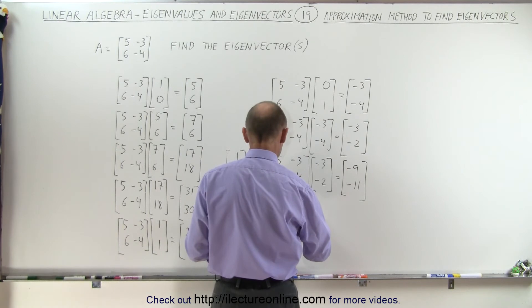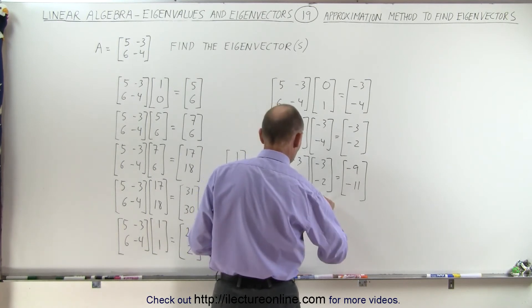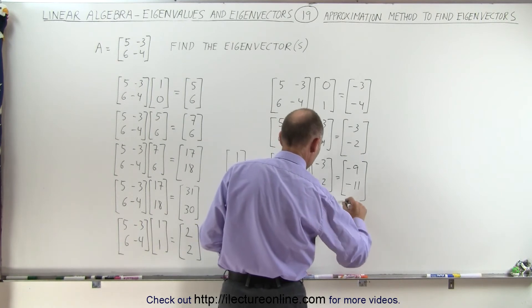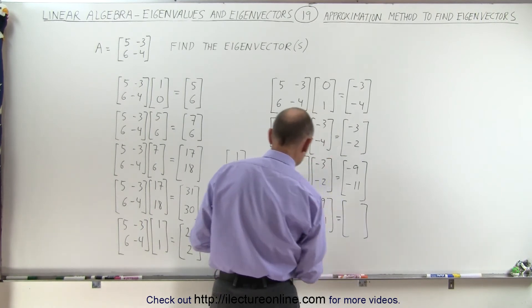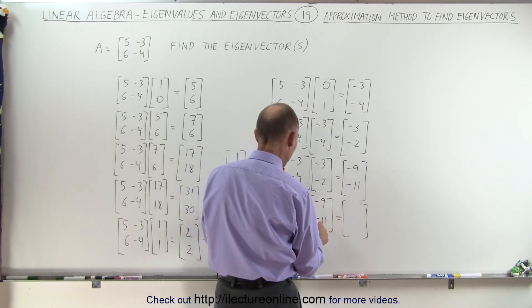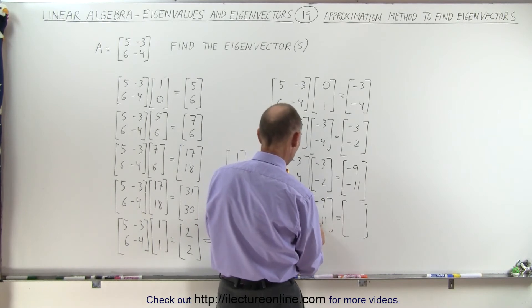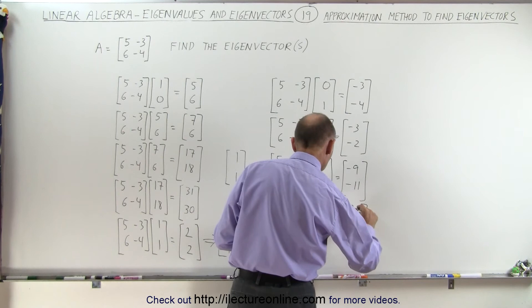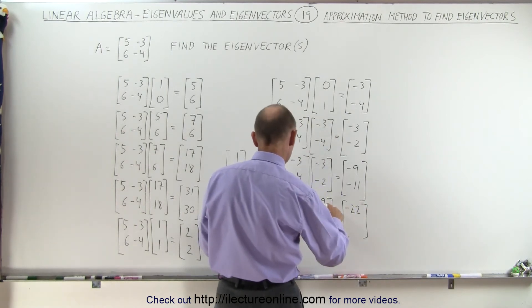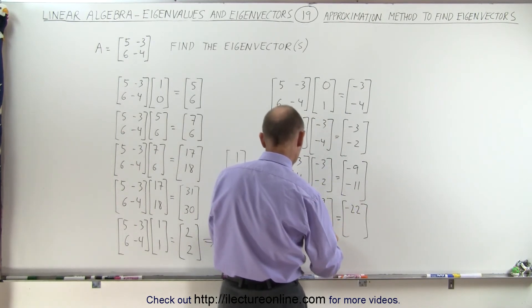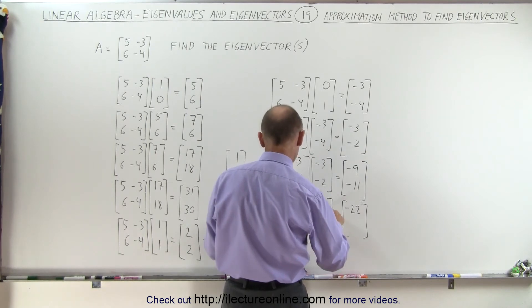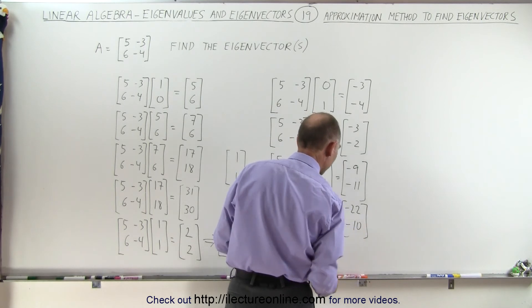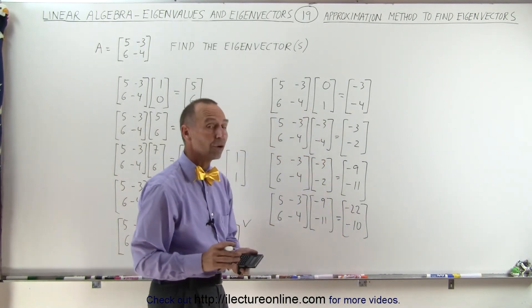So let's do this one more time. 6 and minus 4, and multiply that times minus 9 minus 11. And let's see what we get. So that's minus 45 plus 33, minus 45, that's 22, that's minus 22. And here we get minus 54 plus 44, 54, 44. Ah, let's see here. 4, that's minus 4, that's minus 10. Now I'm getting a 2 to 1 ratio. May that be the other eigenvector?